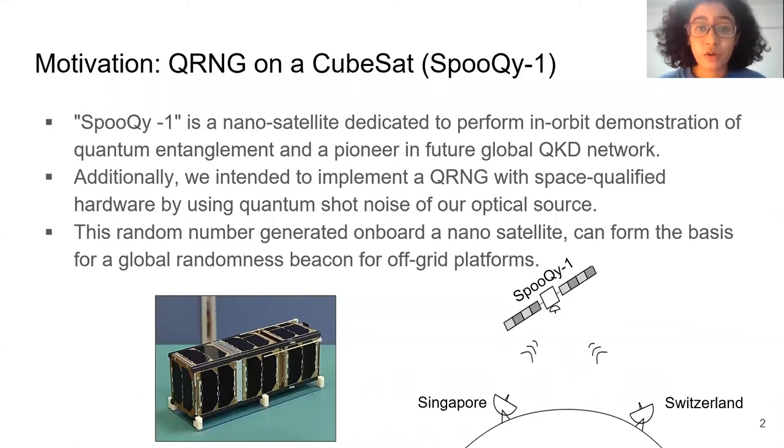We have built a quantum random number generator on board a nanosatellite and we have tested the functionality of our QRNG and the quality of our randomness. The primary goal of our work was to demonstrate quantum entanglement in space and lay the foundation for future global QKD networks. An additional goal was to build a QRNG on a nanosatellite using the quantum shot noise of our optical source.